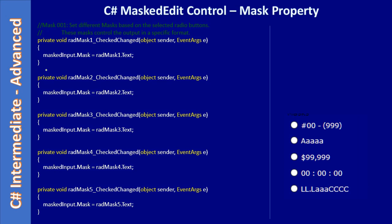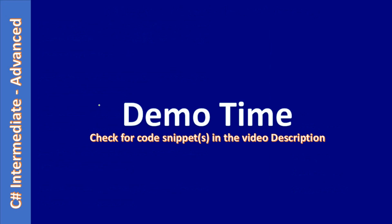In the code, we take our masked text box control named 'maskedInput' and use the Mask property. We have radio buttons, and we directly assign the radio button's text to the Mask property, since Mask accepts a string. We handle the CheckedChanged event of each radio button — 'mask1', 'mask2', and so on — and assign the text directly to the Mask property of our masked text box control.